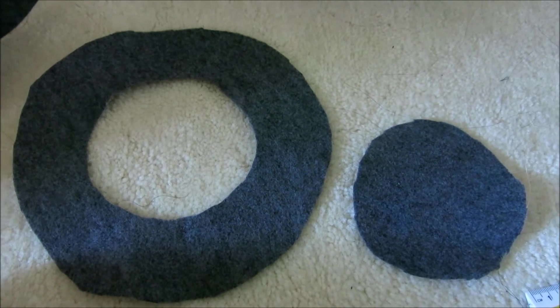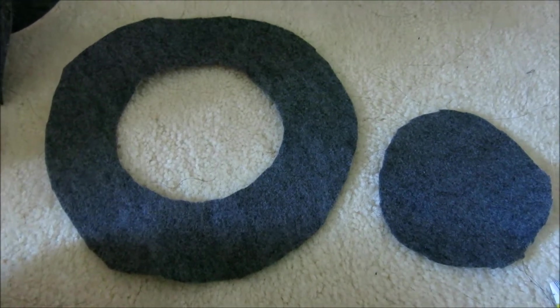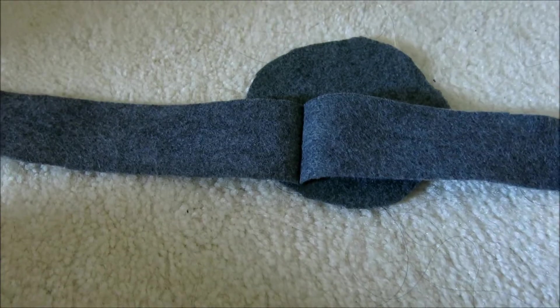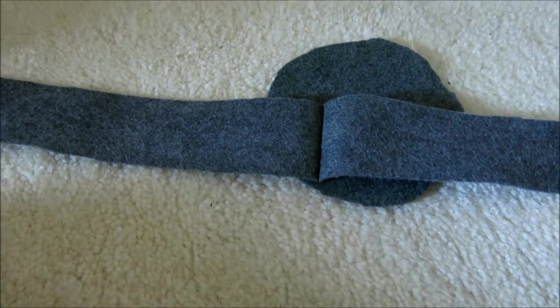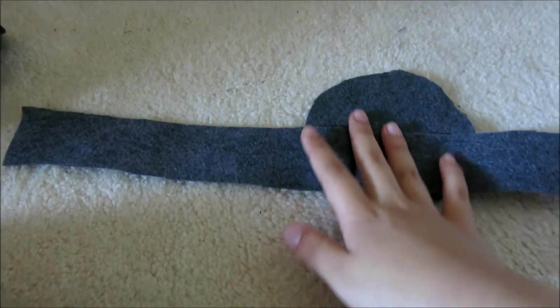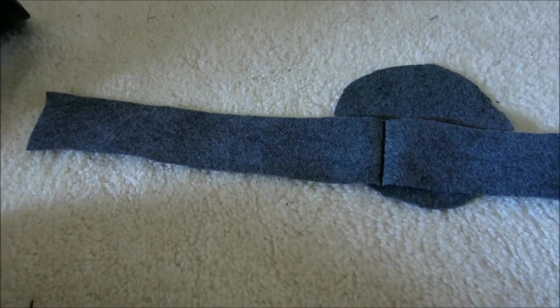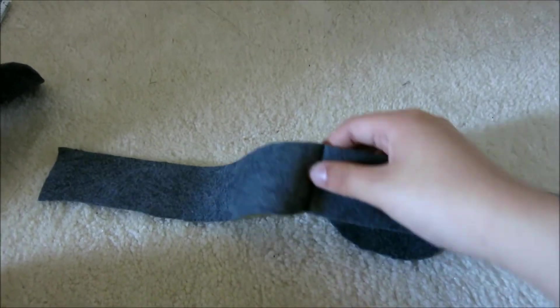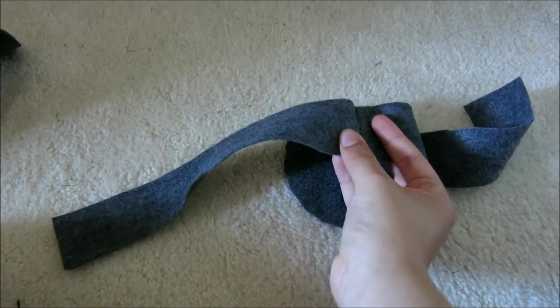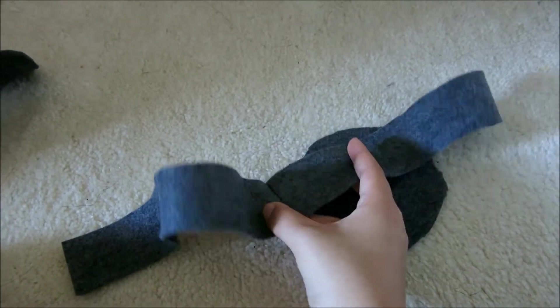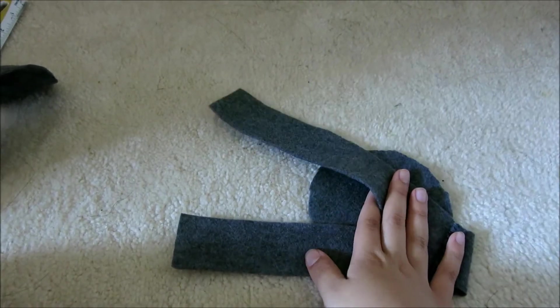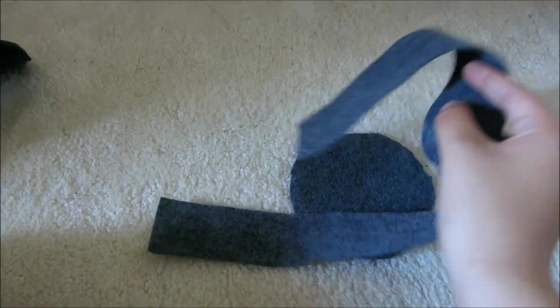Once you're finished cutting out your inner circle, you should have two pieces that look like this. This is going to be your brim and this is going to be the top of the hat. The rectangle that I had wasn't long enough to go around the perimeter of the circle. So I just sewed two together and you can do this too if you don't have enough felt to make your rectangle that will fit around the perimeter of the circle.